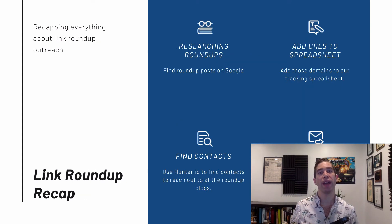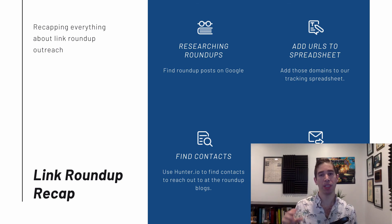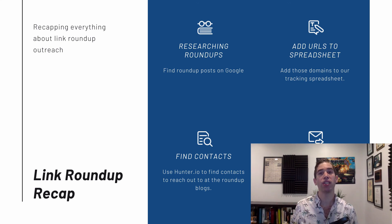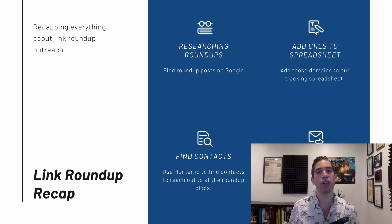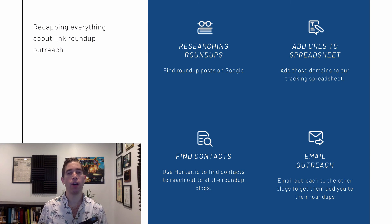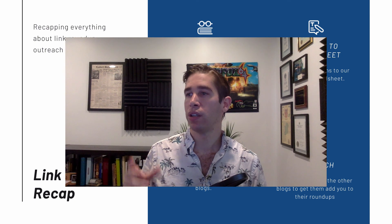Let's recap link roundup link building outreach. First, go to Google and search for roundup posts using search operators like intitle and inurl, and try modifiers like weekly or monthly along with your target keyword. Then add those contacts to your master outreach spreadsheet. Use Hunter.io to find email addresses for those contacts. Then send your personalized outreach emails and follow up. You can also get copies of our spreadsheet template and template emails at postaga.com/DL.